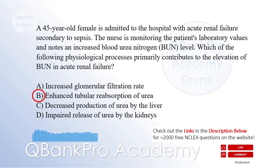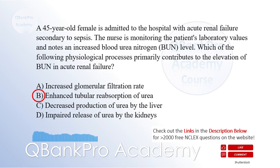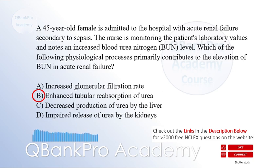Increased GFR, option A, would lead to decreased BUN levels. Decreased production of urea by the liver, option C, and impaired release of urea by the kidneys, option D, are not primary mechanisms contributing to the elevation of BUN in acute renal failure.